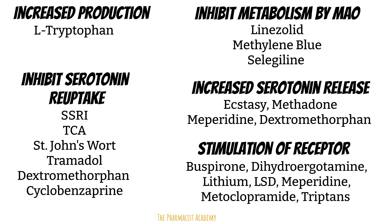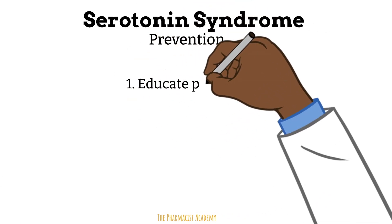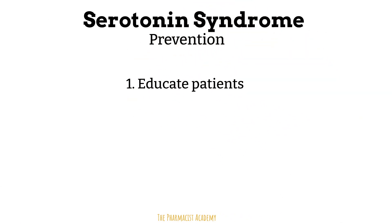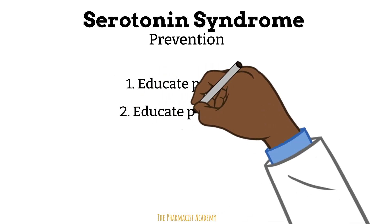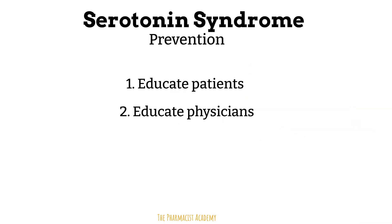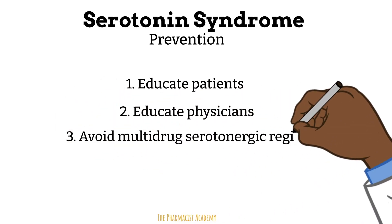Knowing the medications that increase serotonin levels, we must be vigilant as pharmacists when reviewing patient medication orders. The best approach is to prevent serotonin syndrome by educating patients and improving awareness. Patients may not know which medications are serotonergic, but they can keep a list of their medications for physicians to review before prescribing anything new. These medications are used for different diseases and may be prescribed by different doctors, so physician education is equally important. As pharmacists, we want to review patient profiles for serotonergic drugs and prevent dangerous combinations.